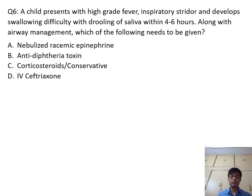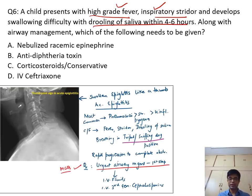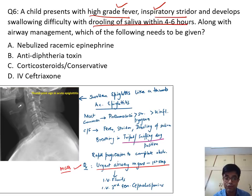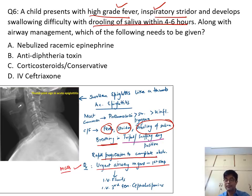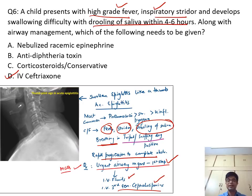Question number 6: A child presents with high-grade fever, inspiratory stridor, and developed swallowing difficulty with drooling of saliva within four to six hours — rapidly progressive with stridor and fever. This is a child with acute epiglottitis. The child has fever, stridor, drooling of saliva, and sometimes breathes in a tripod position. There is rapid progression to complete obstruction. The first step in management is always airway management. After airway management, you need IV fluids and IV third-generation cephalosporins because it is a fulminant bacterial infection. The answer to question number six is D — IV ceftriaxone.